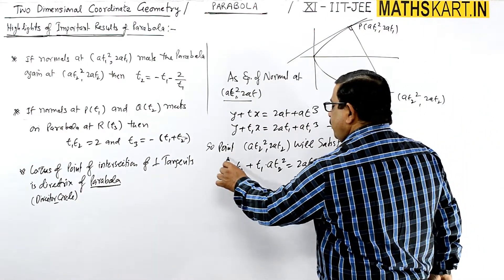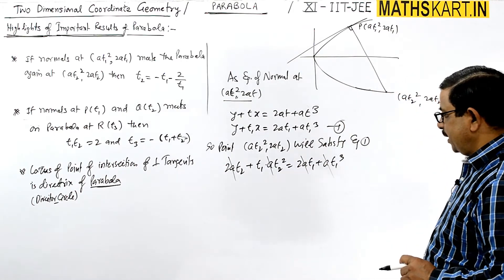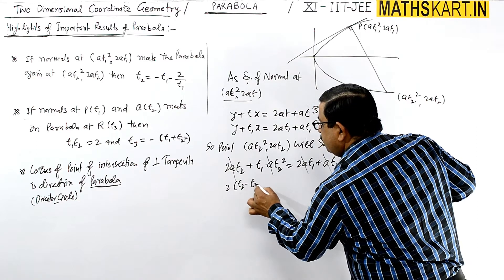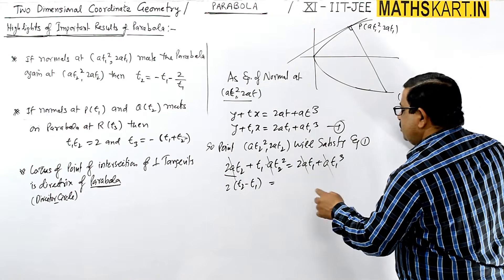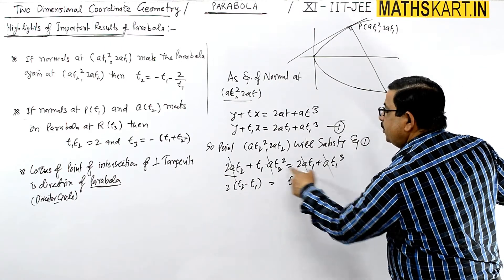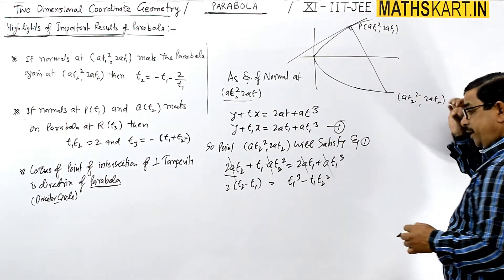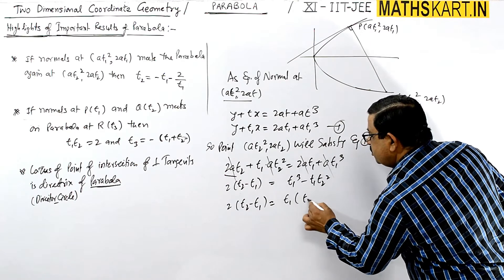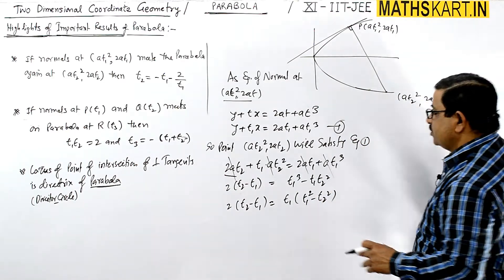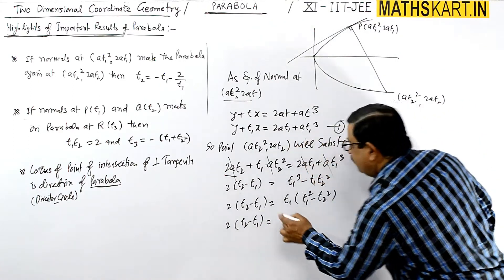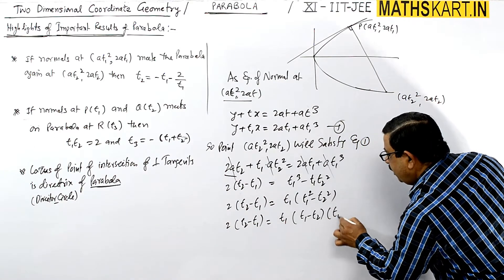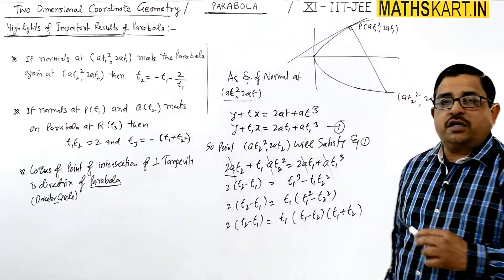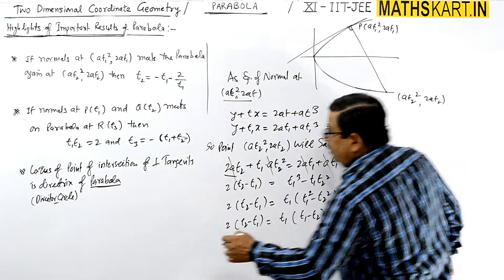The factor 'a' cancels throughout. We then rearrange: t1·t2² − 2t2 = 2t1 + t1³ − 2t2, which gives t1³ − t1·t2² = 2t1 − 2t2. Factoring the left side: t1(t1² − t2²) = 2(t1 − t2). The difference of squares gives t1(t1 − t2)(t1 + t2) = 2(t1 − t2).